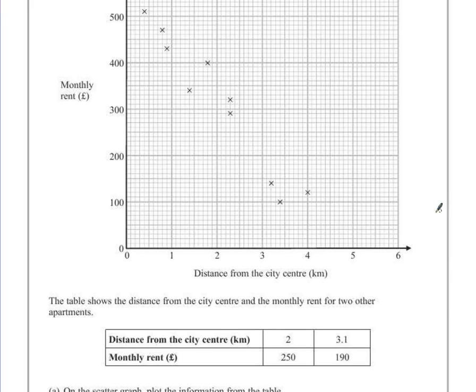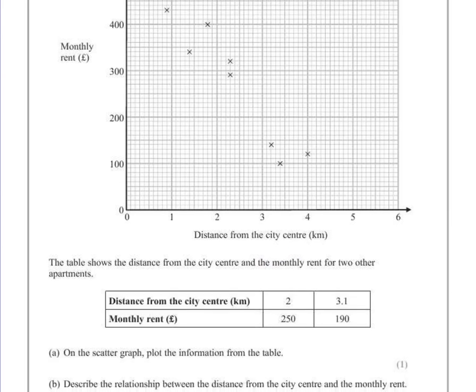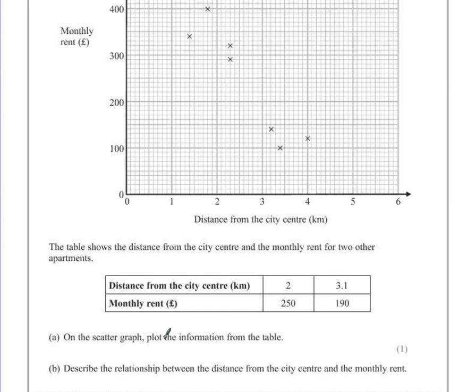The table shows the distance from the city center and the monthly rent for two other apartments. So for one mark, question A says, on the scatter graph, plot the information from the table.